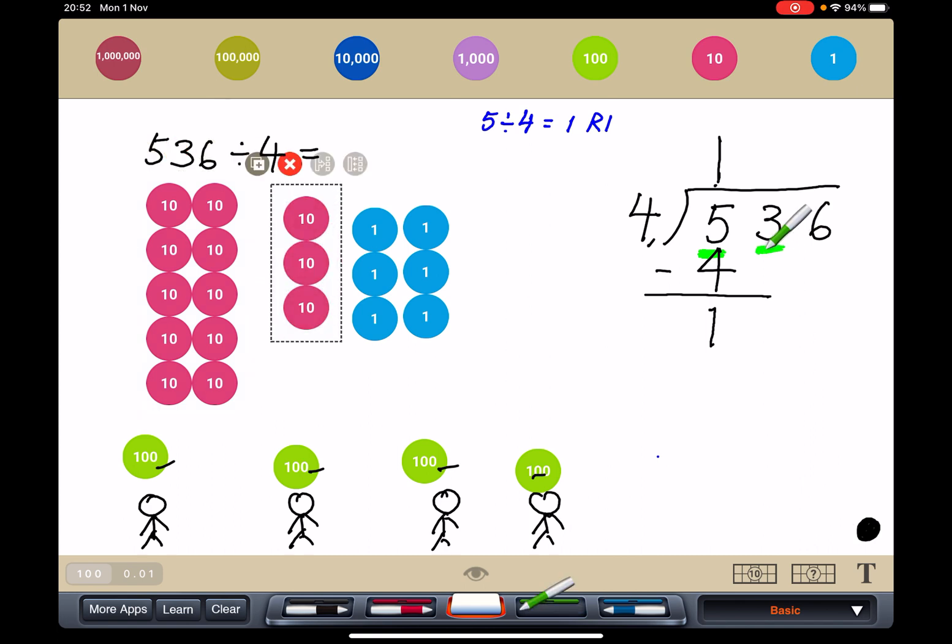So now, how many tens have I got? I have 13. I have 13 tens. So it's kind of like bringing the 3 down, but it's actually regrouping the hundreds and adding the 3 that we already have. So this is 13 tens.